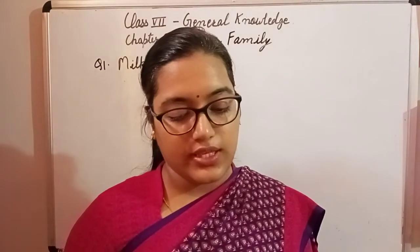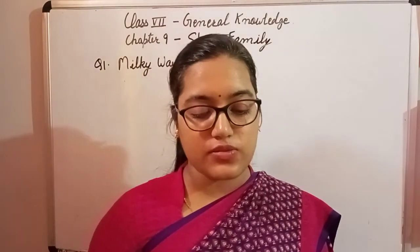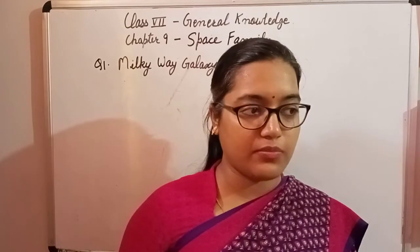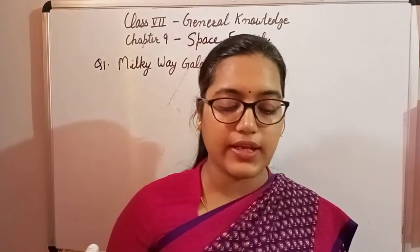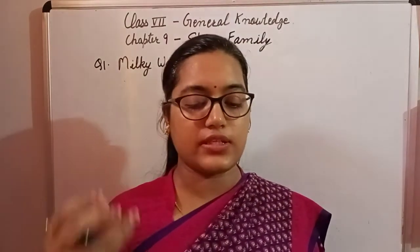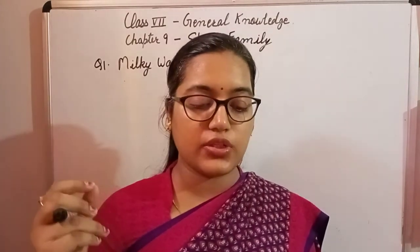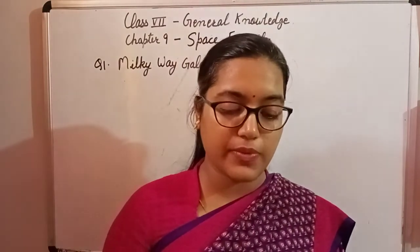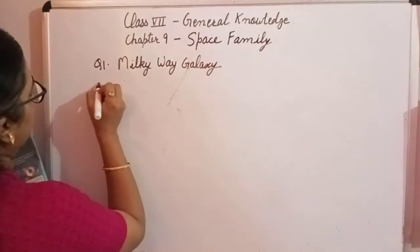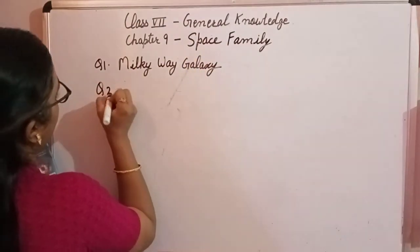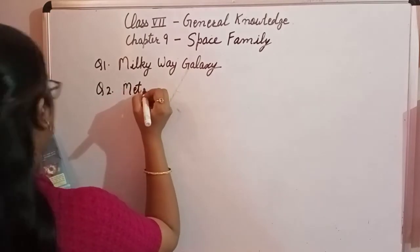Question number two: these are small heavenly bodies that become luminous by friction and burn upon entering the Earth's atmosphere. Small heavenly bodies that burn in the Earth's atmosphere when they enter — that is meteors.